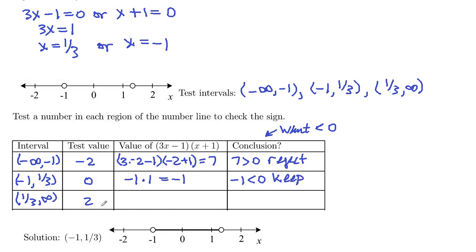And then plug a positive 2 in. So 3 times 2 minus 1, and then 2 plus 1, so times 3. So this would be what? 6 minus 1, 5 times 3, 15. And 15 is greater than 0. And we want less than 0, so we'll reject that one.